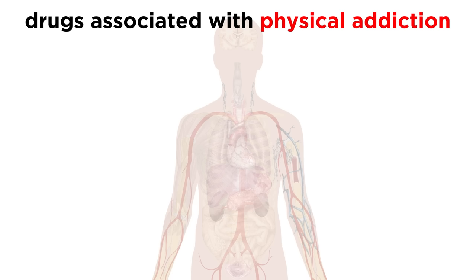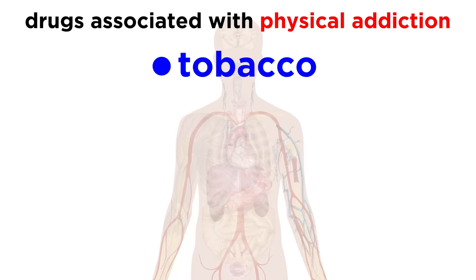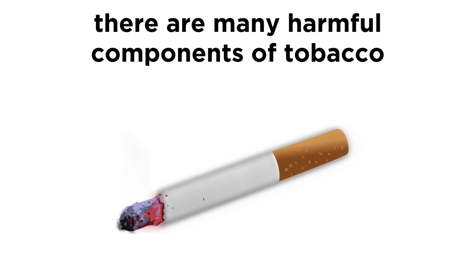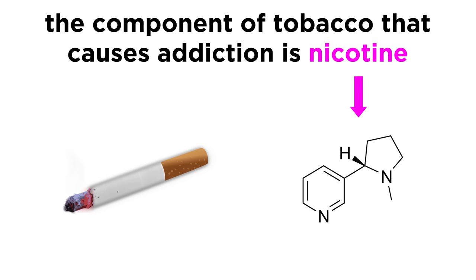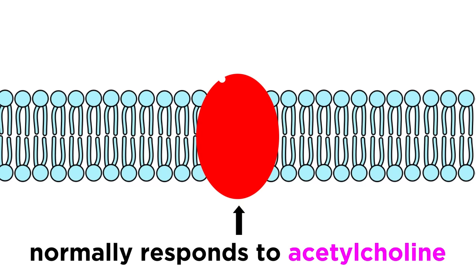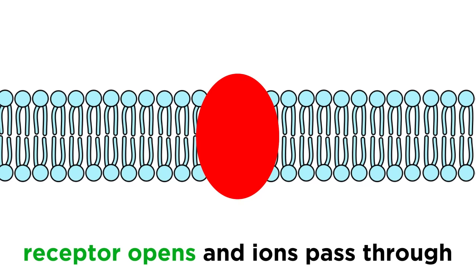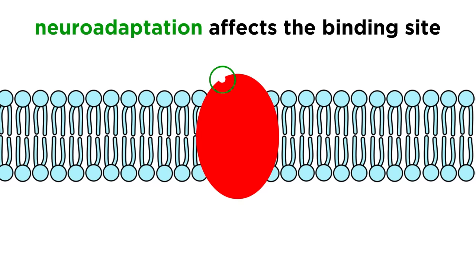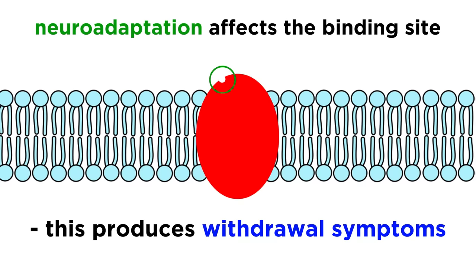While physical addiction can arise with a wide variety of substances, a few common ones are tobacco, alcohol, cocaine, and opiates. With tobacco, there are many compounds that are ingested and many of these are harmful to one's health, but the one that causes addiction is nicotine. This acts on nicotinic cholinergic receptors in the brain, which normally respond to acetylcholine, but nicotine is an agonist for these receptors as well. This causes the receptors to open, allowing ions to enter, which eventually results in the release of neurotransmitters like dopamine, which generates a pleasurable sensation. The brain responds through neuroadaptation, affecting the binding sites for nicotine, which produces withdrawal symptoms, thus establishing tolerance and dependence.